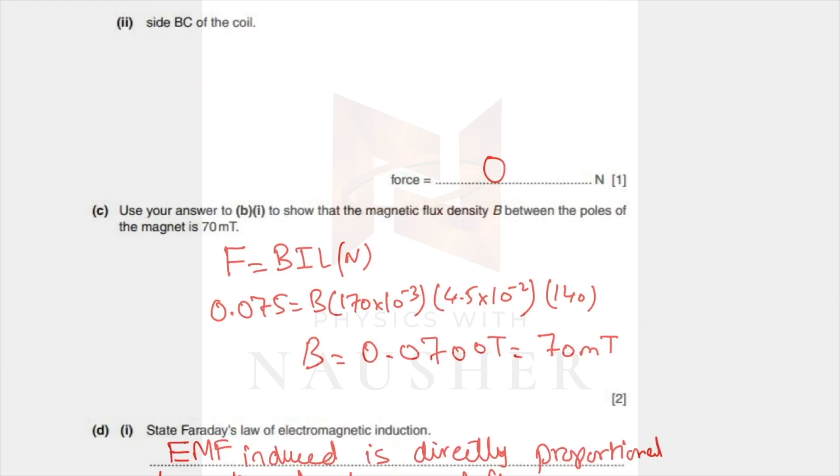What is the force on side BC of the coil? Well, side BC of the coil will experience no force because that side is parallel to the field. This is north, this is south, and this is your coil. Your side which is this side should be perpendicular to the field. This side right now is parallel to the field, therefore it experiences no force.